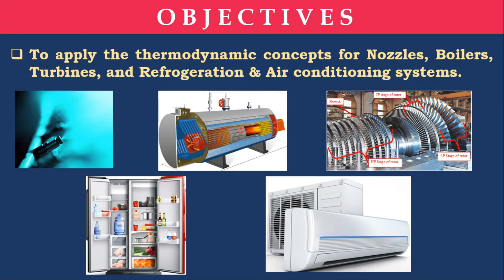Nozzle is Unit 1, Boiler is Unit 2, Turbine is Unit 3, and Refrigeration and Air Conditioning is Unit 5. Nozzle, boiler, and turbine — these three are steam-related, for power generation. Whereas refrigerator and air conditioner is for refrigeration. Then what about Unit 4? That is Objective 2.